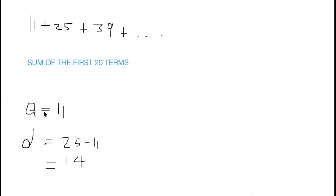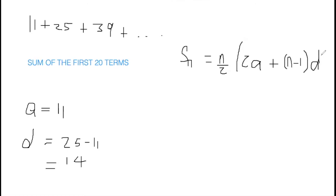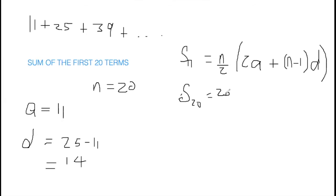Now let's find the sum of the first 20 terms. A and D remain the same. The sum formula is Sn equals N over 2, open bracket, 2A plus (N minus 1) times D. The first 20 terms means N is 20. Substituting: 20 over 2, with A being 11, so 2 times 11, plus 20 minus 1 in brackets, then we replace D with 14.